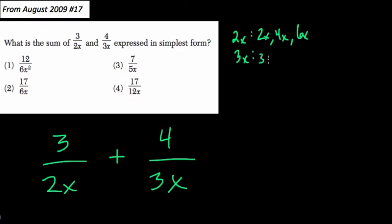For 3, the first multiple is just 3x. 3x times 1 is 3x. 3x times 2 is 6x. So really, the first common multiple, the least common multiple, is 6x.